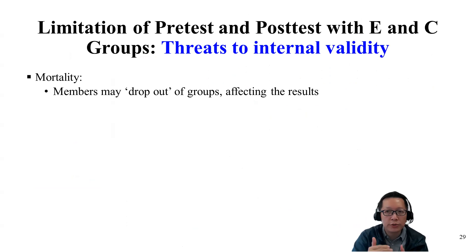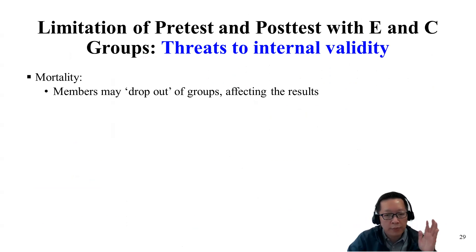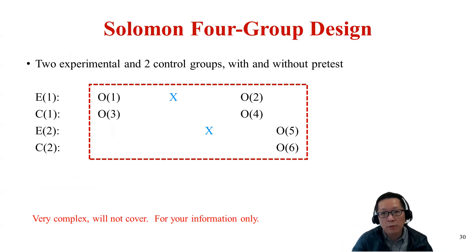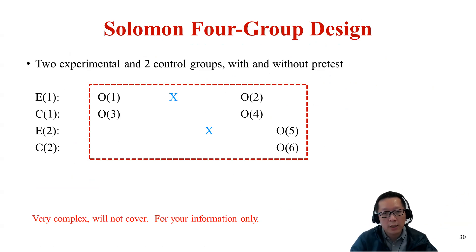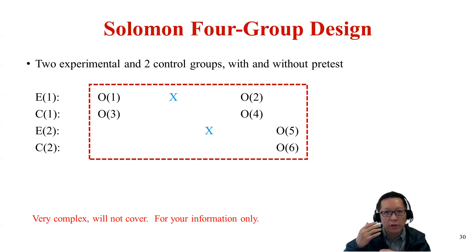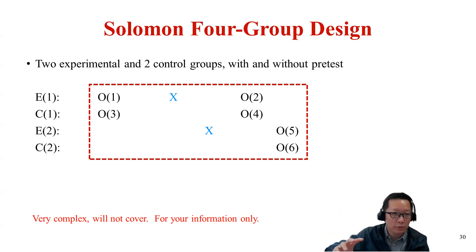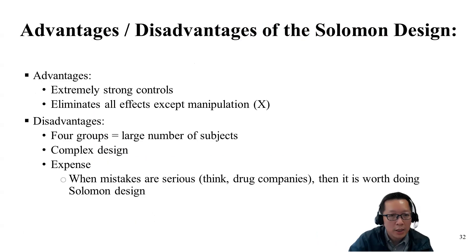Of course, the pre-post design with experimental and control groups also has issues — some people can drop out, and dropout is always a problem in pre-post studies. There is also another type called the Solomon Four Group design, which combines the pre-post with experimental/control design and the post-only with experimental/control design. It's more complicated but won't be covered here.